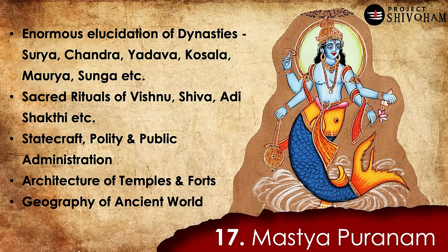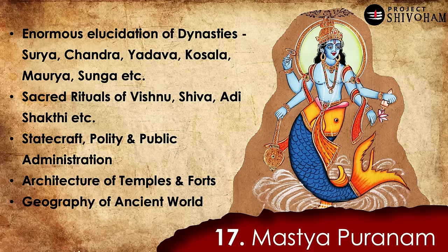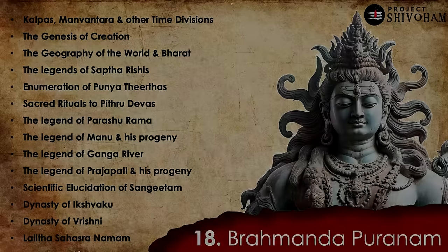Number 17, Mastya Puranam: it has a very special trait — it talks about the lineages of Surya, Chandra, Yadava, Kosala, Maurya, Sunga, and many other dynasties in a very linear format, continuously narrating who came from whom without breaking the bloodline chain. That is a special quality rarely found in other Puranas. It also details sacred rituals for the worship of Vishnu, Shiva, and Adi Shakti; statecraft, polity, and public administration; architecture and engineering of temples, forts, and public living spaces; and the geography of the ancient world.